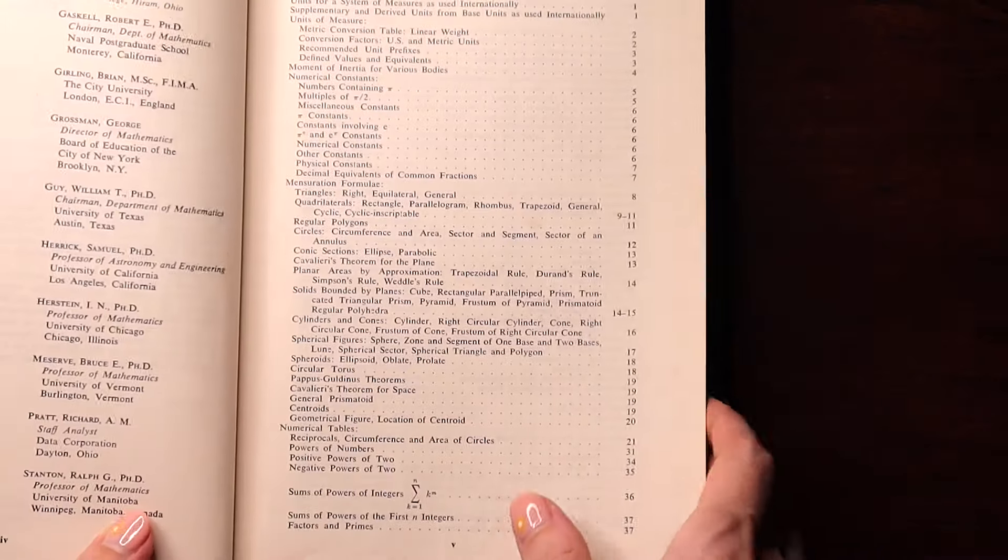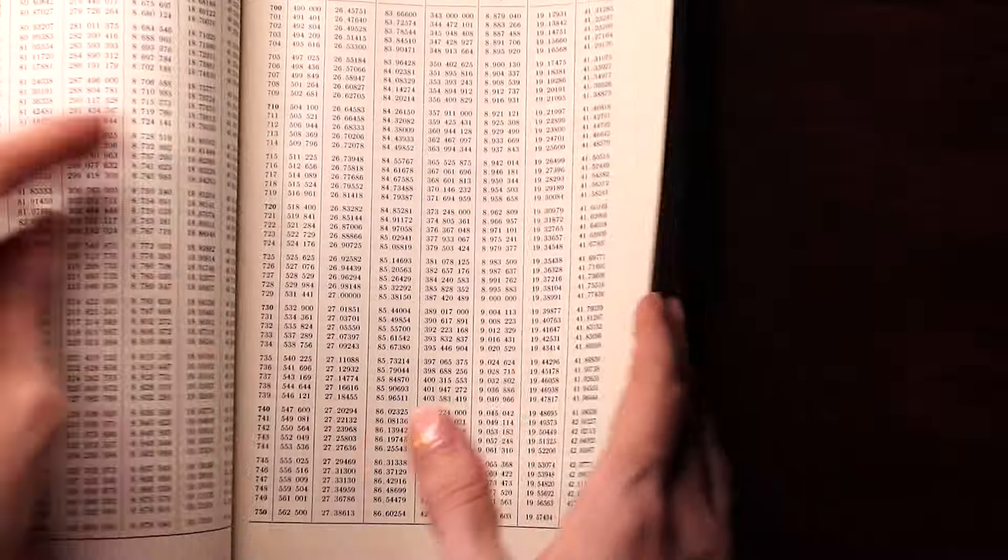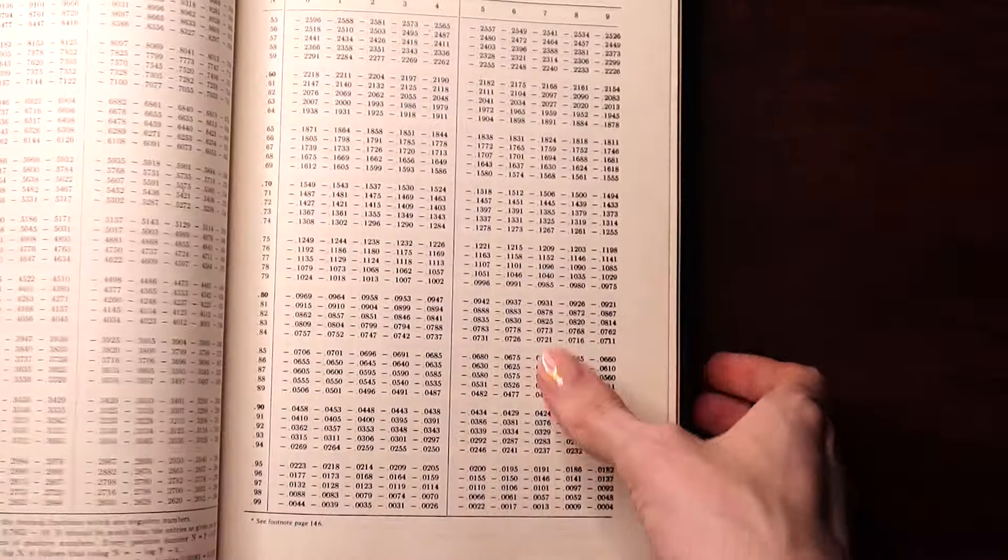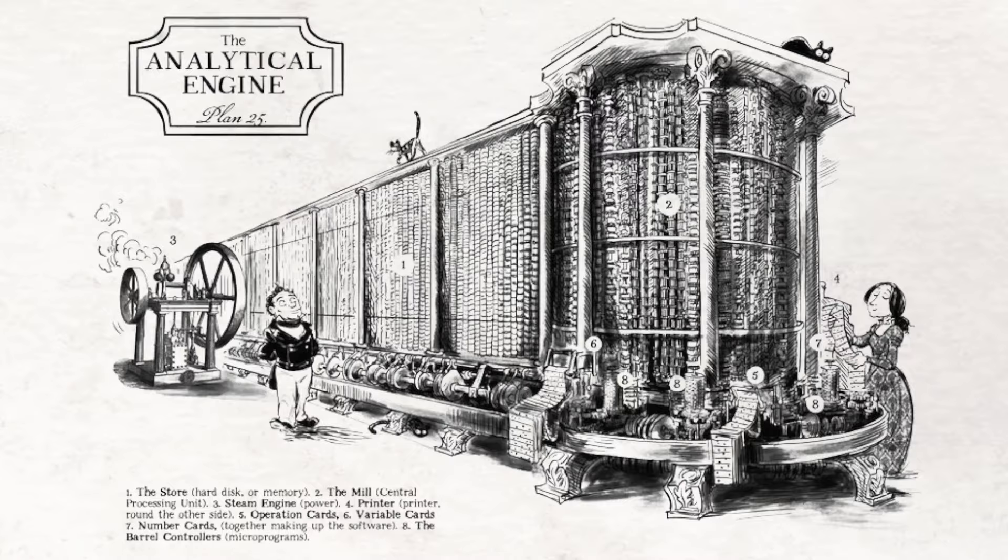Working out big tables of logarithms and also trigonometry values was something that motivated us inventing computers in the first place, to make calculating these tables easier and ensure that there are less mistakes.